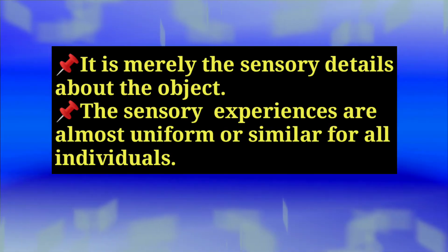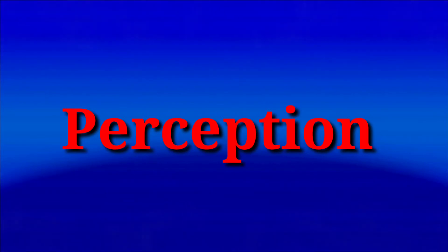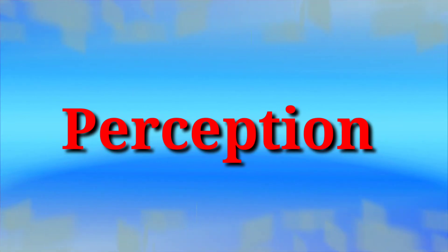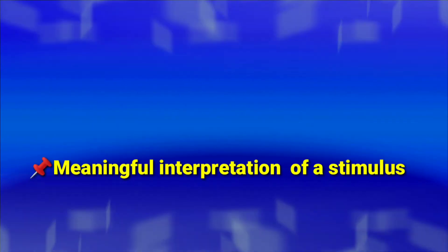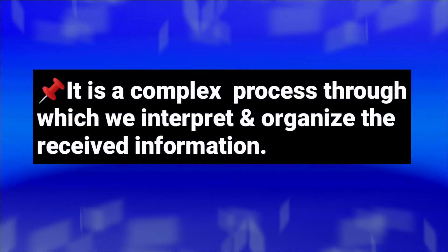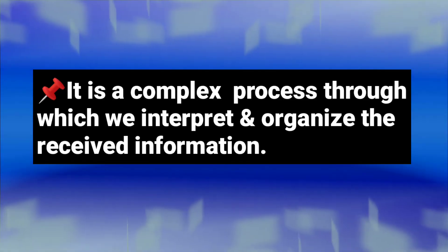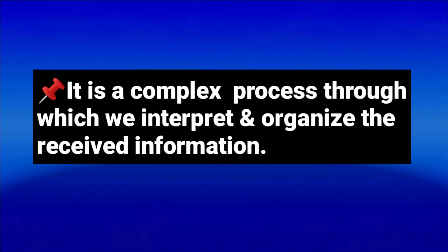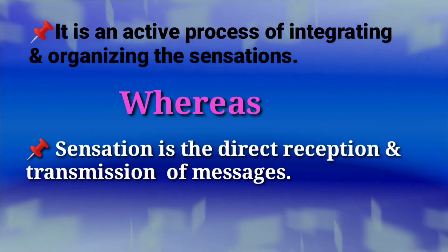When we try to understand what we hear or what is going on around us, or what we see, the process becomes perception. When we try to meaningfully interpret what is happening around us or what we are seeing, that process is known as perception. The manifold interpretation of an event or of a stimulus is called perception. Perception is a complex process through which we interpret and organize the received information.